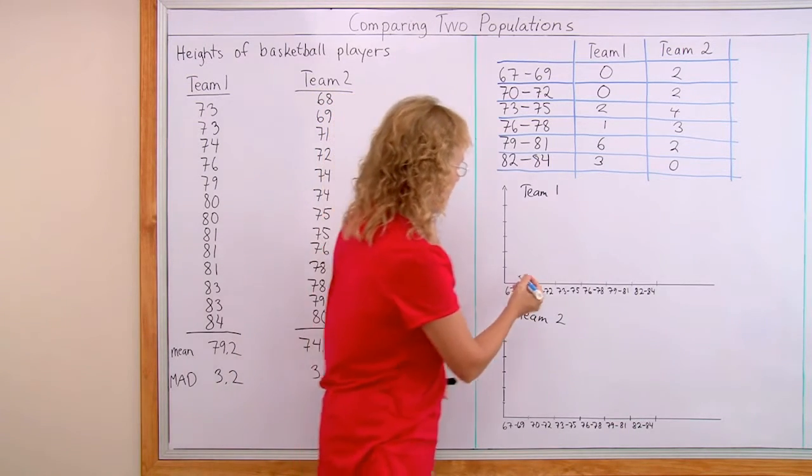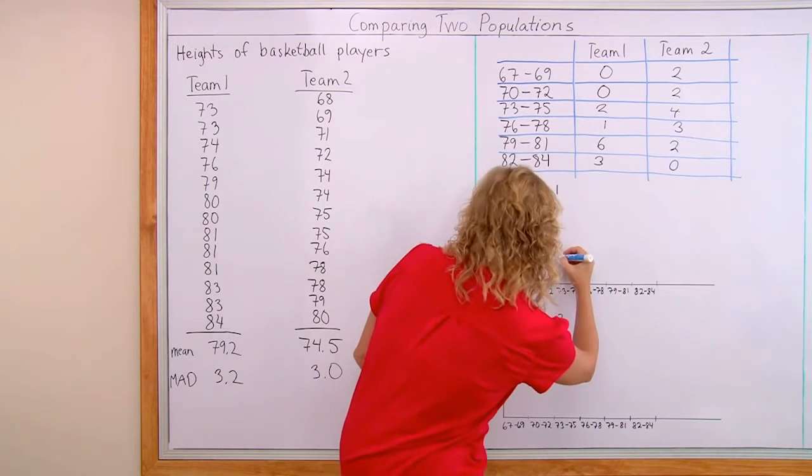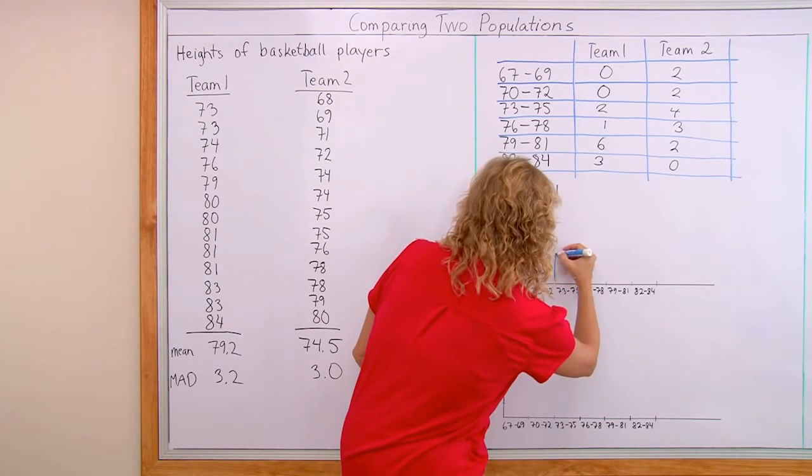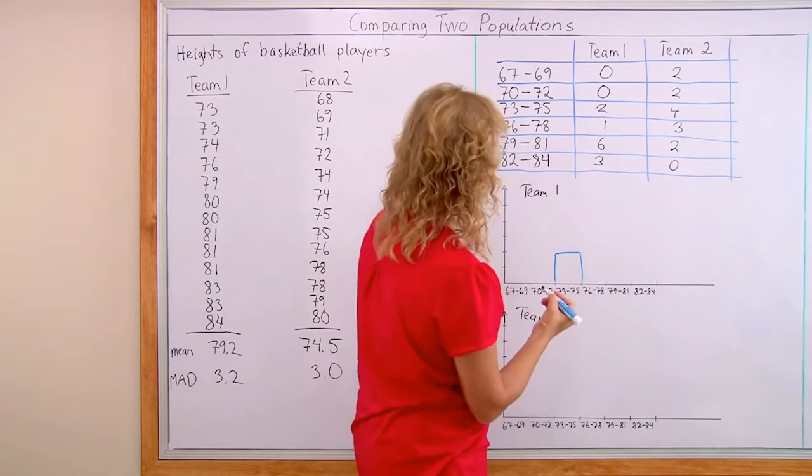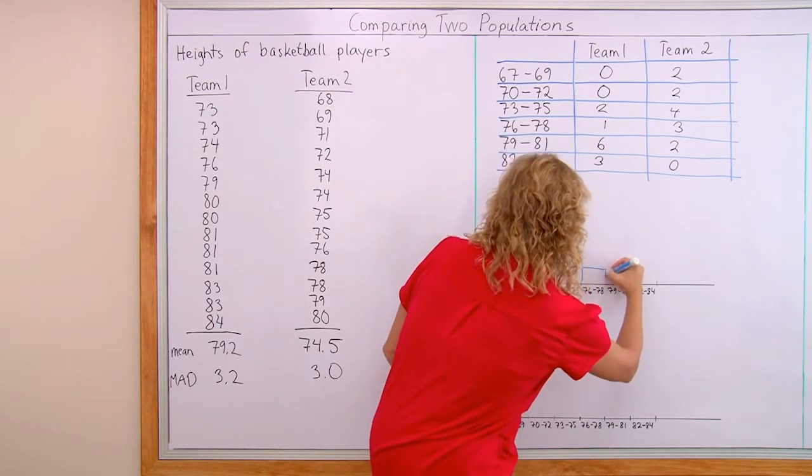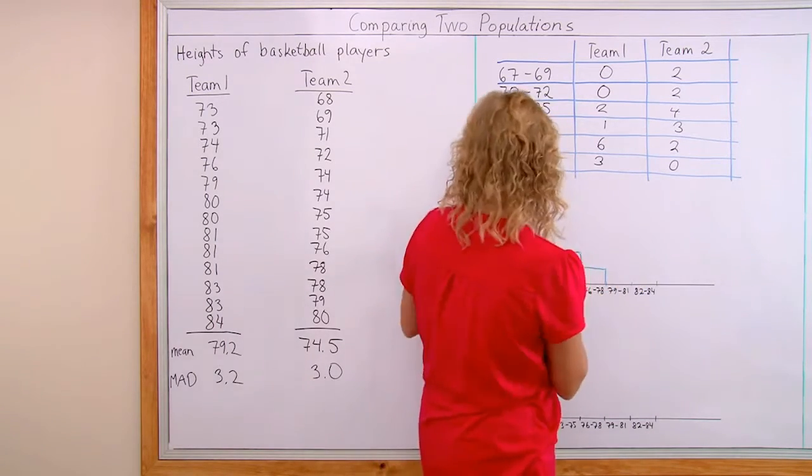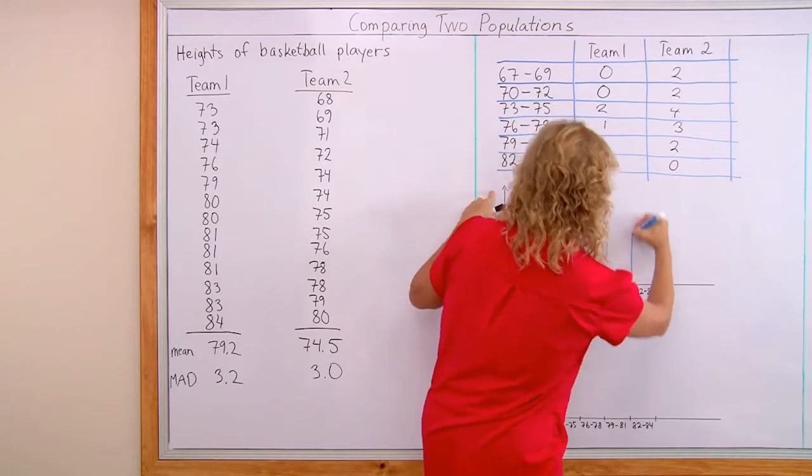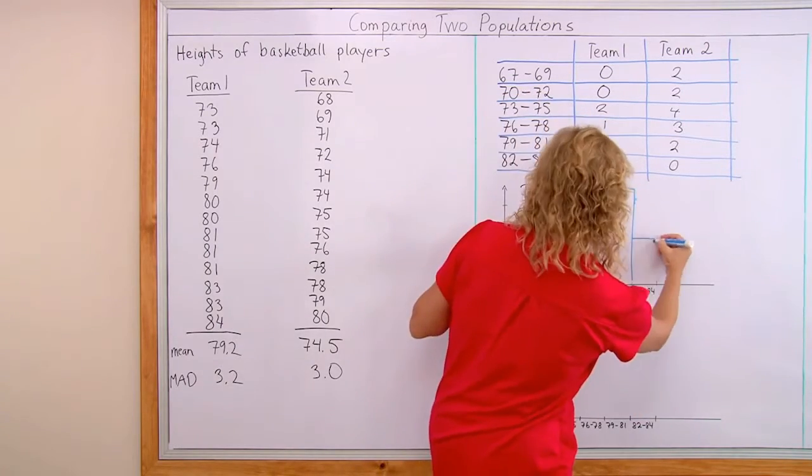So, team 1, that's 0, 0. Then over here, 2. I'm just gonna rough sketch this to save time, and not use a ruler.